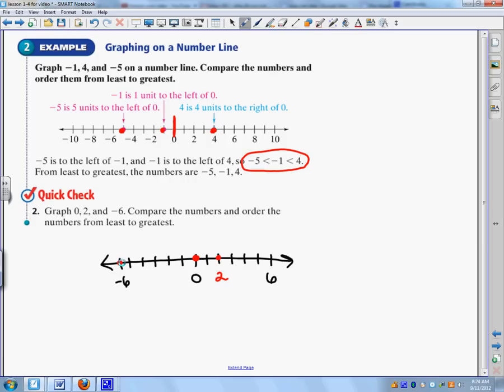So when they ask you to compare, they want you to do this comparison. So I would say negative 6 is less than 0, which is less than 2. And then order the numbers from least to greatest. So that's pretty easy. You just do negative 6, comma, 0, comma, 2. And that's it.